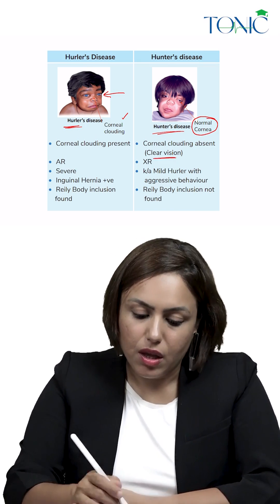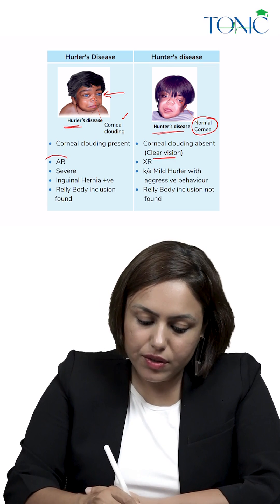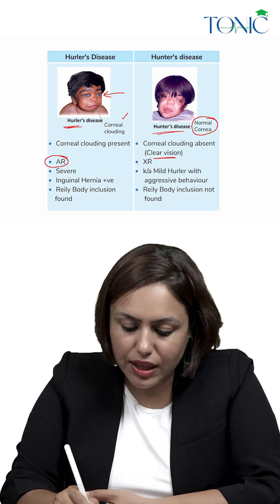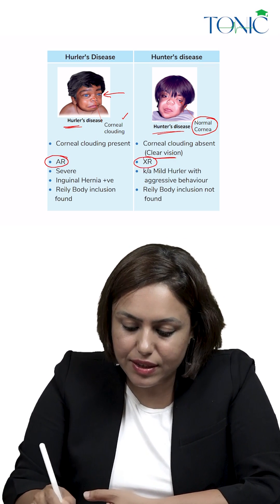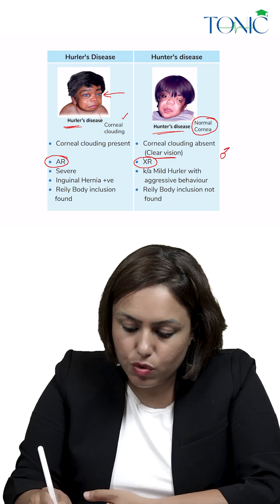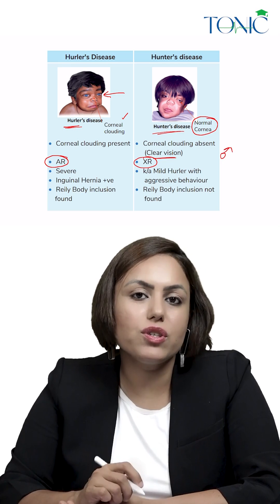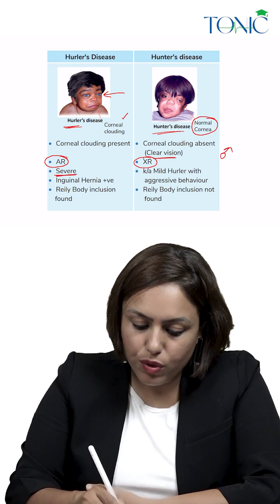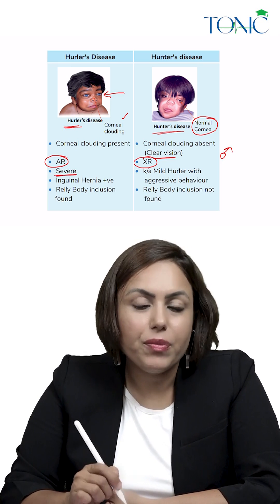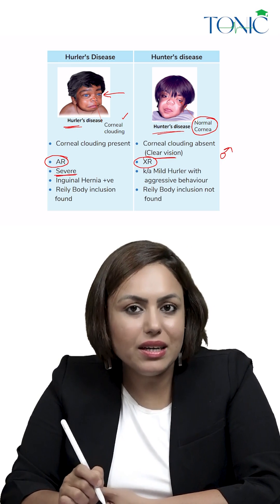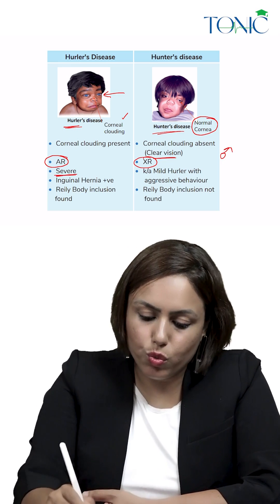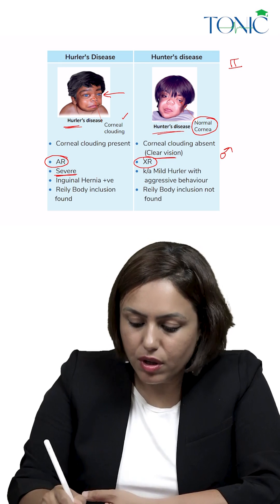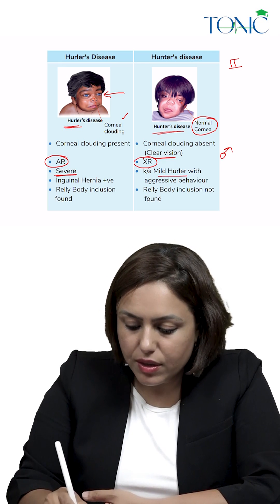Hurler disease is autosomal recessive, but Hunter is X-linked recessive, so mostly the patient is male. Hurler is more severe, while Hunter (Type 2) is less severe — we say it is mild.